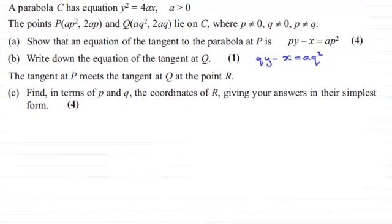Hi there. In the previous part of the question we had the parabola y squared equals 4ax, and we had to find the equation of the tangent at point P and also the equation of the tangent at point Q.